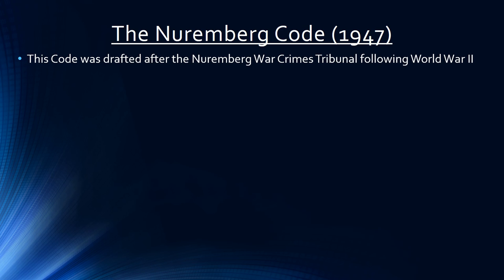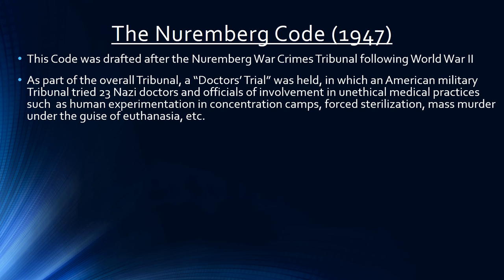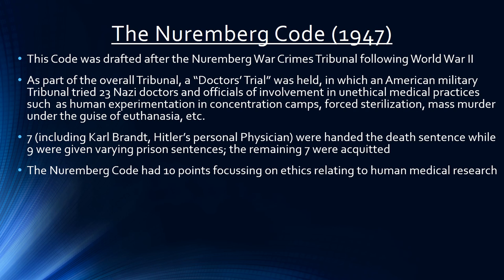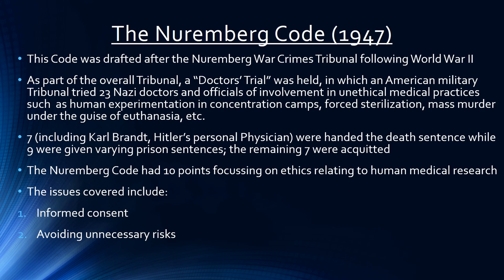The Nuremberg Code was drafted after the Nuremberg war crimes tribunal that followed the Second World War. As part of the overall tribunal, a doctors' trial was also held in which an American military tribunal tried 23 Nazi doctors and officials for involvement in unethical medical practices. Seven of the accused, including Karl Brandt, Hitler's personal physician, were handed the death sentence, nine were given varying prison sentences, and seven were acquitted. The Nuremberg Code had 10 points focusing on ethics relating to human medical research, covering issues including informed consent, avoiding unnecessary risks, and freedom of participants to leave the study.